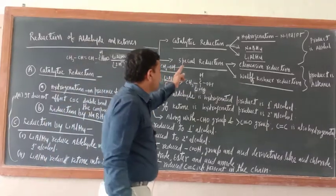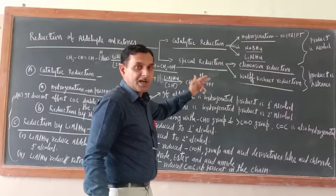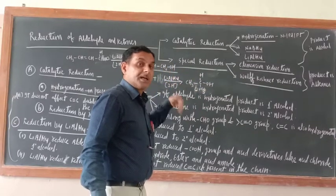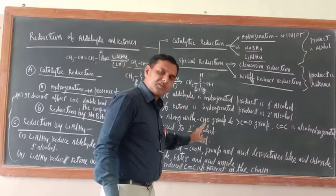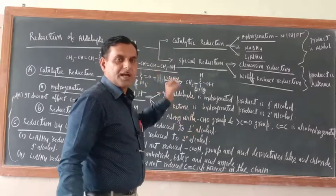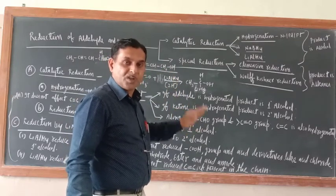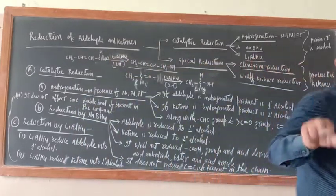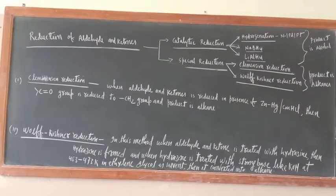Now let us talk about special reduction: Clemmensen reduction and Wolff-Kishner reduction. Unlike normal reducing agents which give alcohol as the product, here you will get alkane rather than alcohol. Normal reduction reaction of aldehydes and ketones yields alcohol, but special reduction yields alkane.